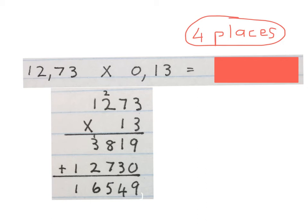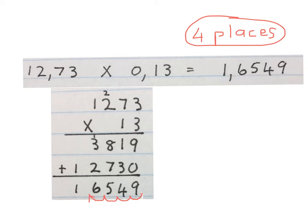Lastly, we bring the comma back four places from behind. The comma is there, so you move it four places: one, two, three, four places. You fill in your final answer: 1,6549. When we do decimal fraction multiplication, count the places behind the comma, write it down — four places. Take the commas out and do a normal multiplication sum, get the answer, and bring the comma back four places from behind. That's our final answer.